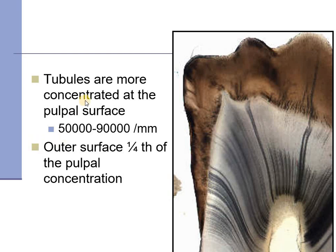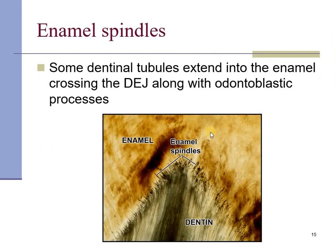These dentinal tubules are more concentrated at the pulpal surface. All the dentinal tubules converge at the pulpal surface, making it around 50,000 to 90,000 tubules per millimeter square. The outer surface is one-fourth of the pulpal concentration. Some dentinal tubules tend to enter into the enamel, giving rise to a spindle-shaped dark outline called enamel spindles.